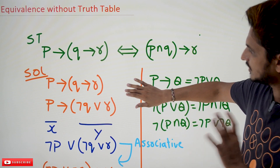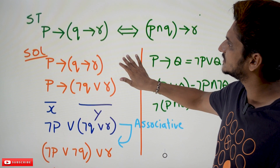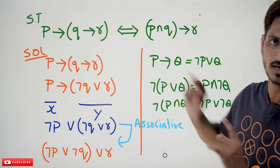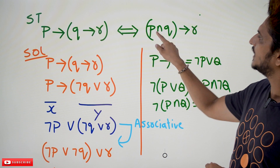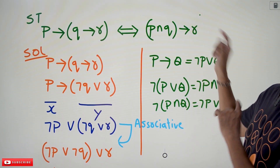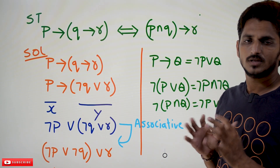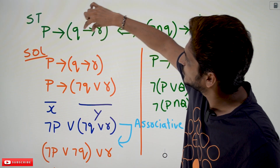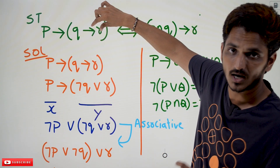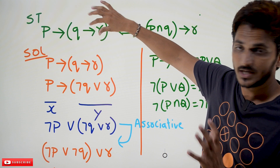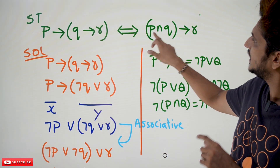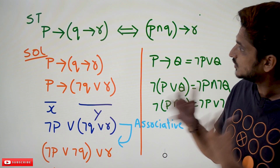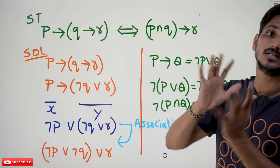Coming to the first example, this is the LHS: it has given P implies (Q implies R). This is equal to (P conjunction Q) implies R. Whenever you look at P implies (Q implies R), we need this equation in the form of (P conjunction Q) implies R. So we need to convert implies into conjunction.